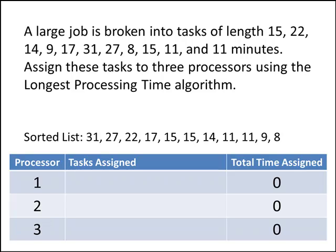So where do we assign our first task — the task that's 31 minutes long? Well, there's a three-way tie: all processors have zero assigned to them. So we break the tie by assigning this task to the lowest numbered tied processor, which is processor number one. We put that 31 under processor number one and update our total time assigned to 31 minutes. We'll put a check mark on task 31 to make sure we don't repeat it, helping us keep track of assigned and unassigned tasks.